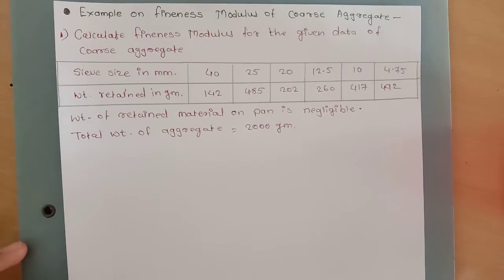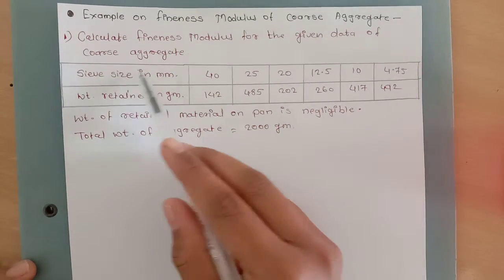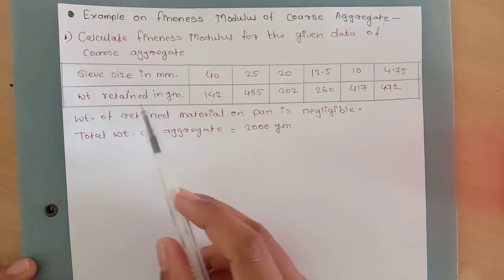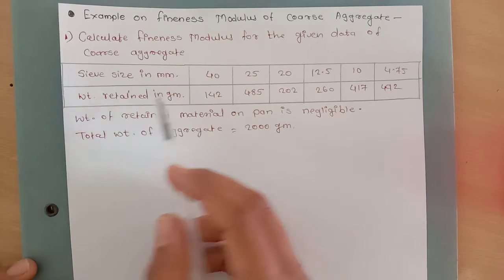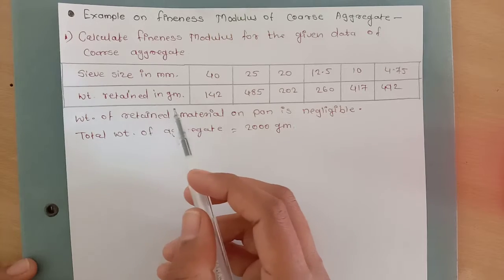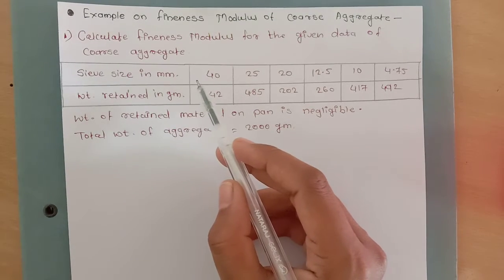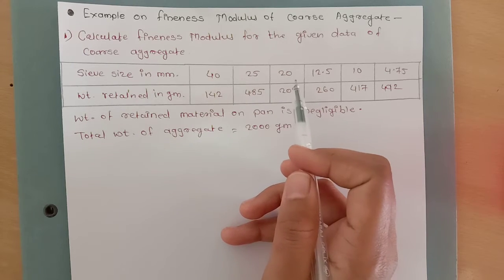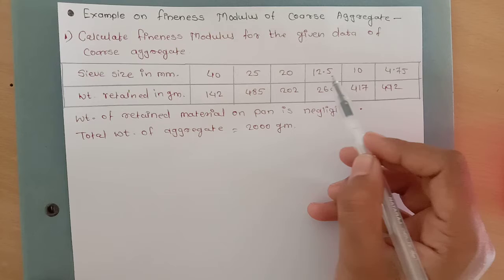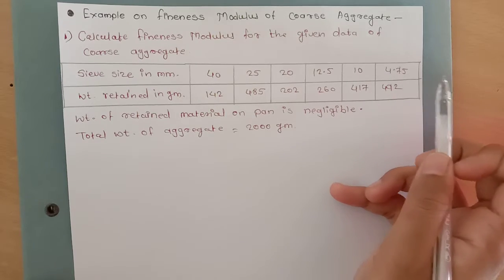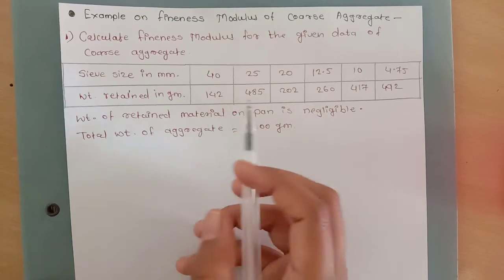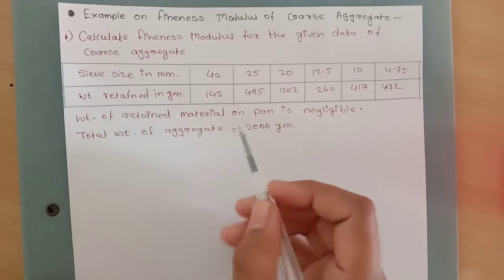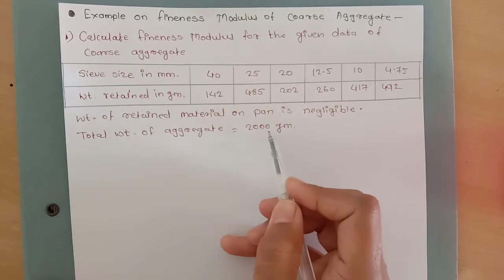Our problem is: calculate fineness modulus for the given data of the coarse aggregate. Here the given data shows sieve sizes in mm and weight retained in grams. The different sieve sizes are 40 mm, 25 mm, 20 mm, 12.5 mm, 10 mm, and 4.75 mm, with percentage weight retained given for each. The weight of retained material on the pan is negligible, and the total weight of aggregate is 2000 grams.